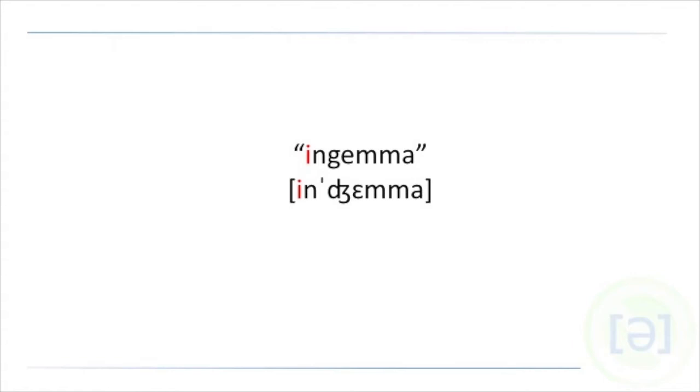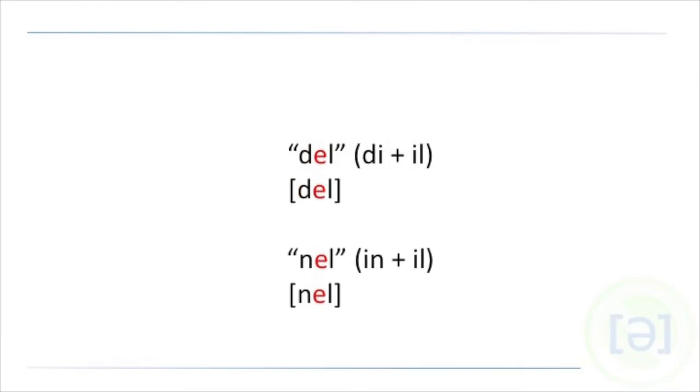And just one last thing, in these last two lines, we have these contractions DEL and NEL. And that's always a closed E sound. DEL is from DI plus IL and NEL is IN plus IL. This comes from the Latin. The construction D-I-I-L creates the closed E in DEL.